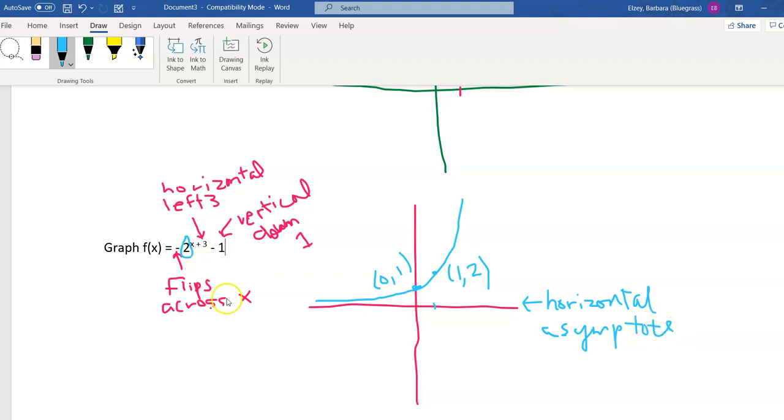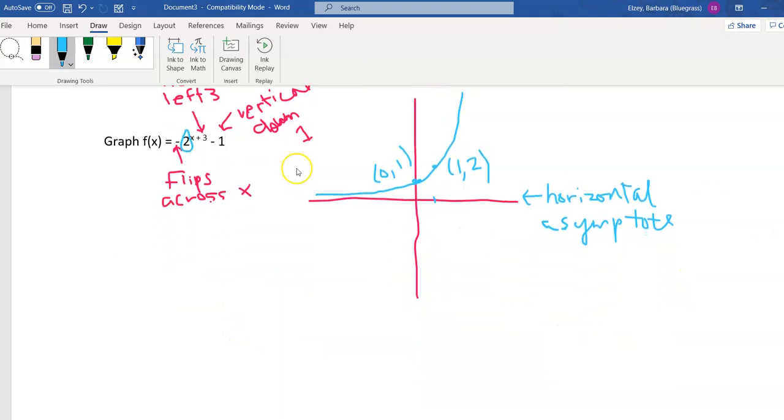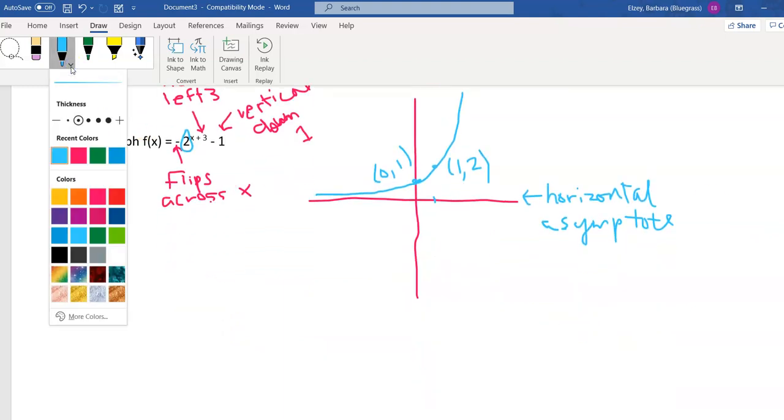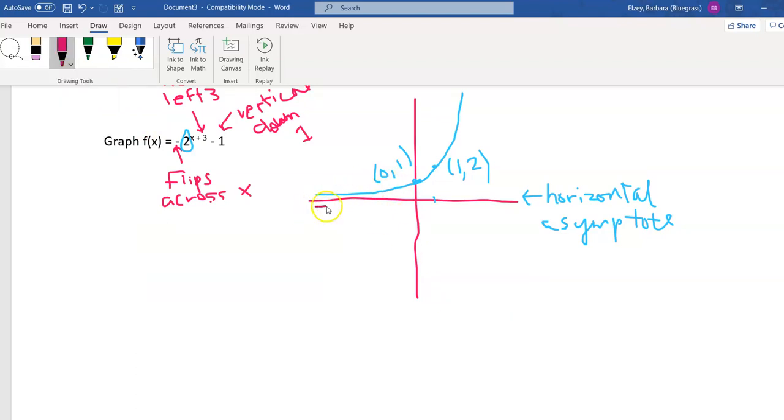So let's first flip it across the x-axis. If we think of this graph flipping across the x-axis, I'm going to just draw it in another color. It's going to end up as a mirror image going kind of like that. Now this point right here will actually end up being 0, negative 1 when it flips over.